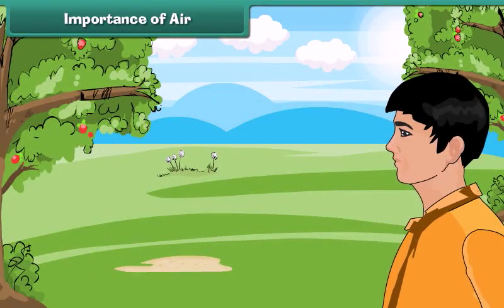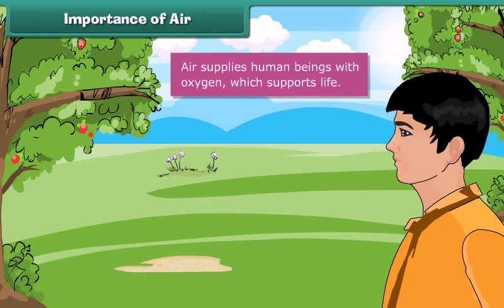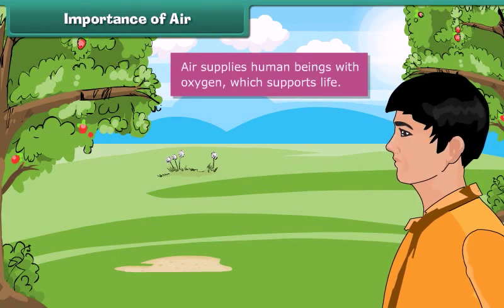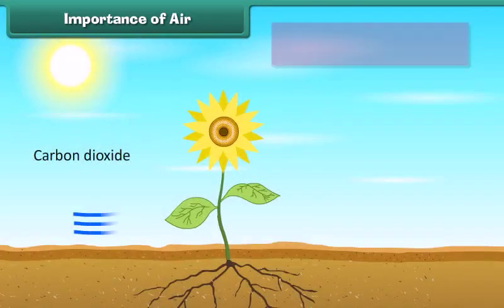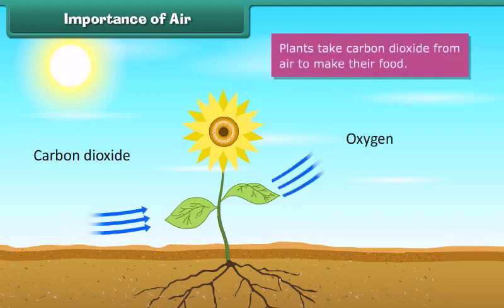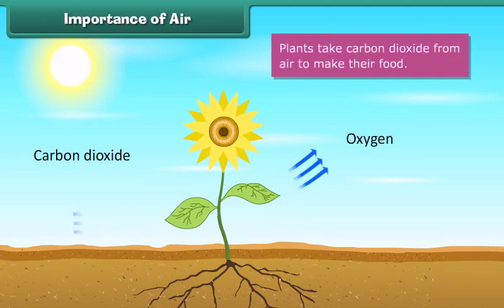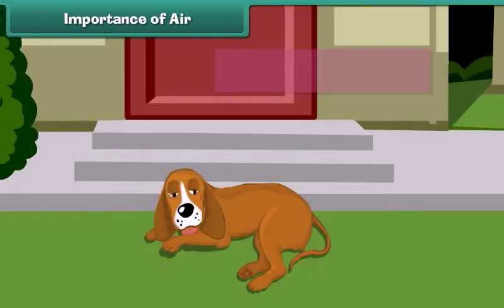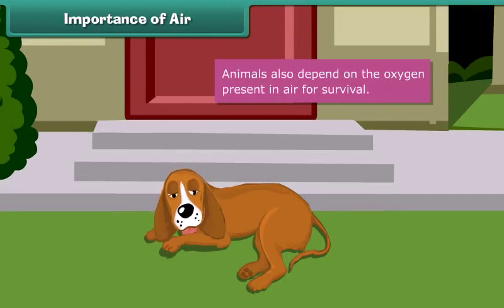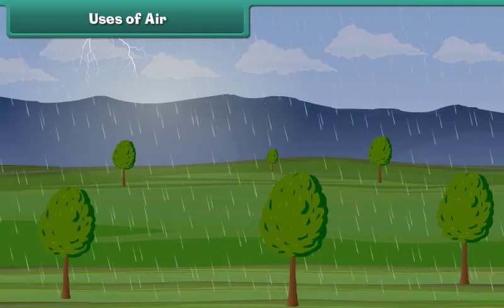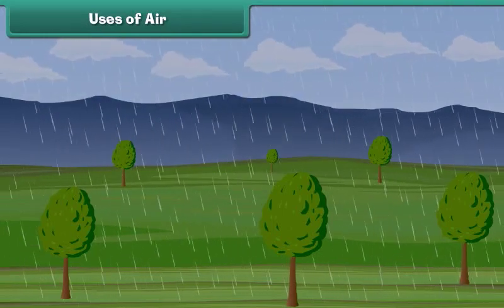Air supplies human beings with oxygen, which supports life. Plants take carbon dioxide from air to make their food. Animals also depend on the oxygen present in the air for survival.